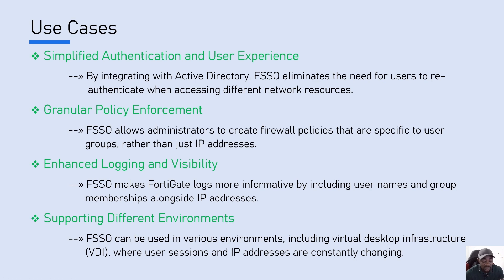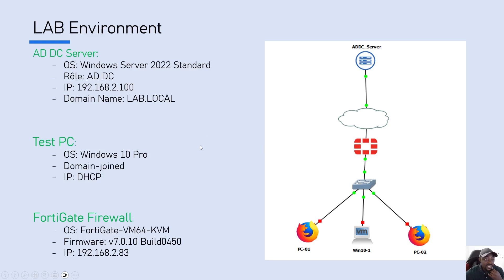You can also integrate FSSO in Citrix environments and VMware Horizon environments. For our lab environment, we have one Active Directory server with just one domain controller on which we will install the collector, some test PCs with Windows 10 that are domain-integrated, and our FortiGate device which is a FortiGate VM KVM on version 7.0.10. Because we are already around 15 minutes into this video, I'll do a second video where we install the FortiGate single sign-on engine on the domain controller and do the testing. See you in the next video.